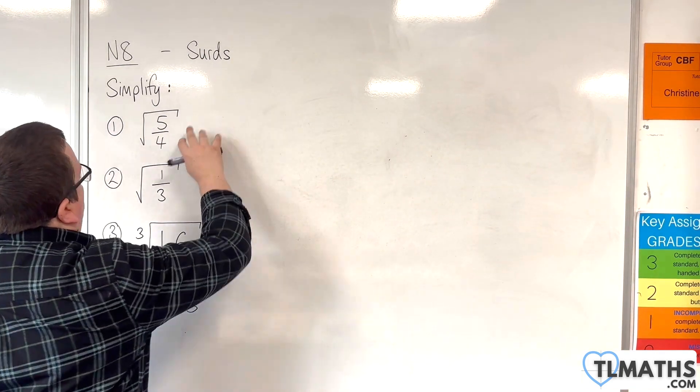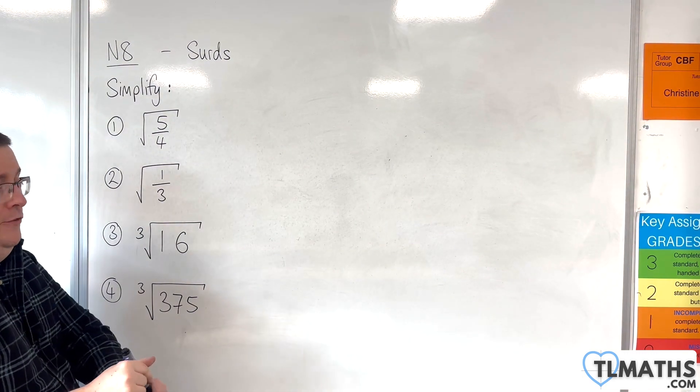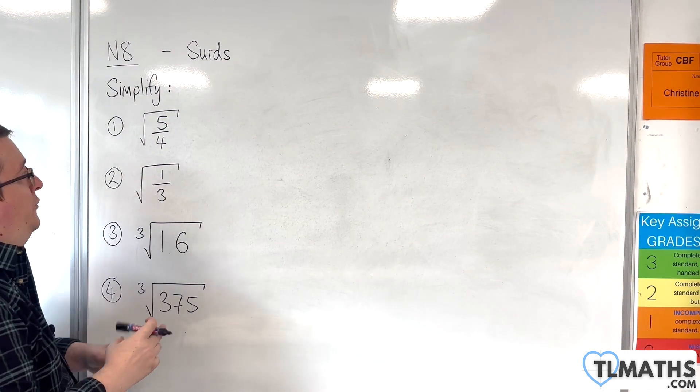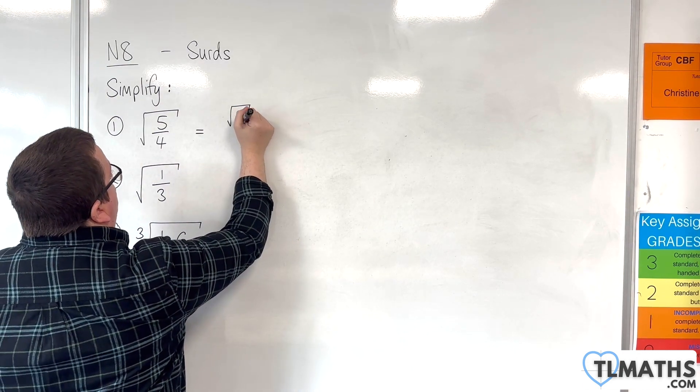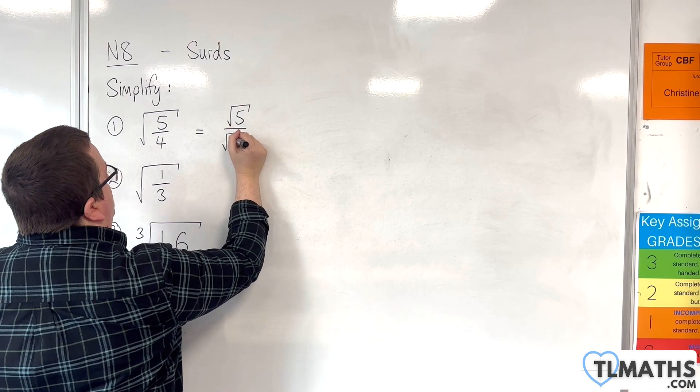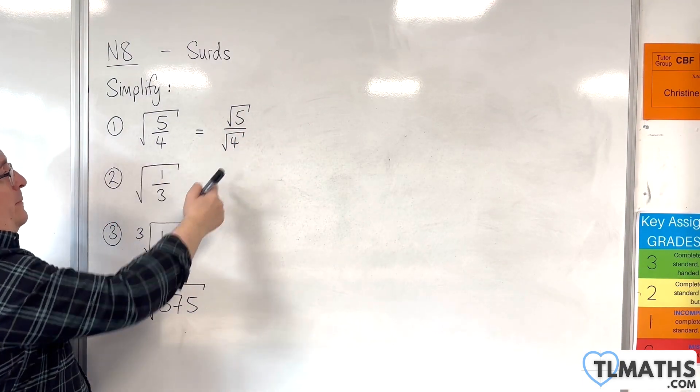So, first example here, the square root of 5 over 4. Now, the first thing to note is that when you are square rooting a fraction, this is the same as square rooting the numerator and square rooting the denominator separately. So, this is the same as that.